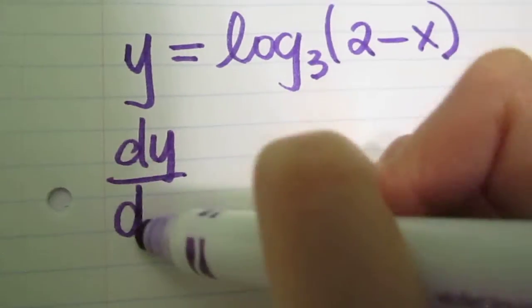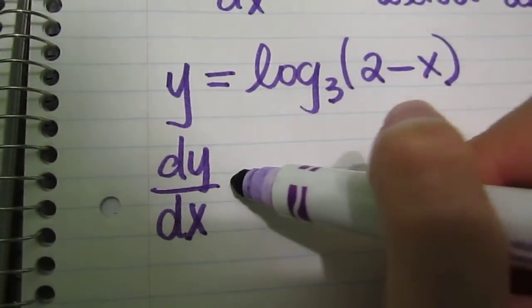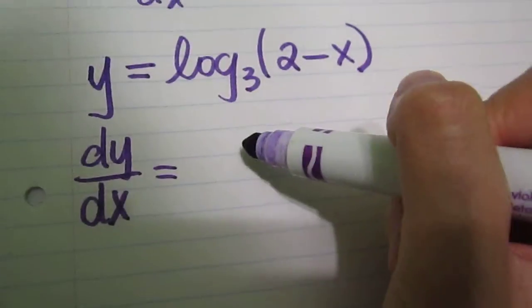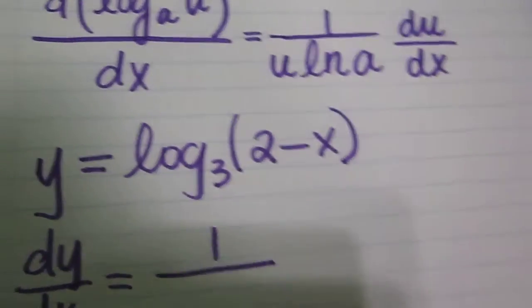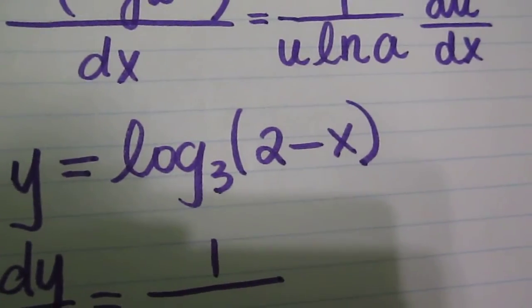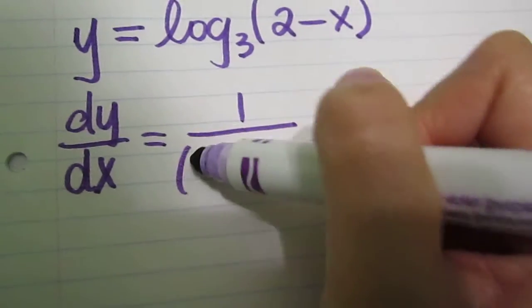So the derivative of y in respect to x is 1 over, now the u in this problem is the quantity of 2 minus x. So I'm just going to write down that quantity.